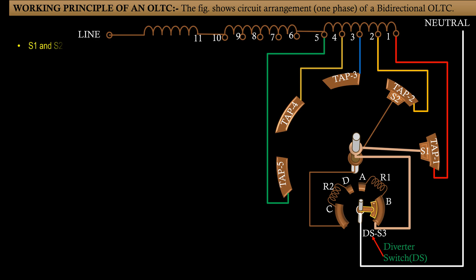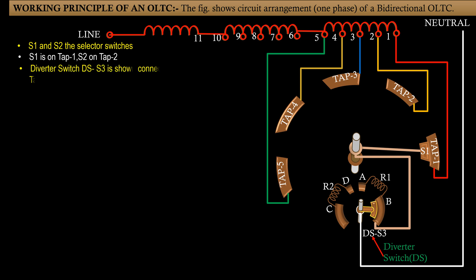S1 and S2 are the selector switches. S1 is on tap 1 and S2 is on tap 2. Diverter switch DSH3 is shown connecting tap 1 to the neutral point of winding.